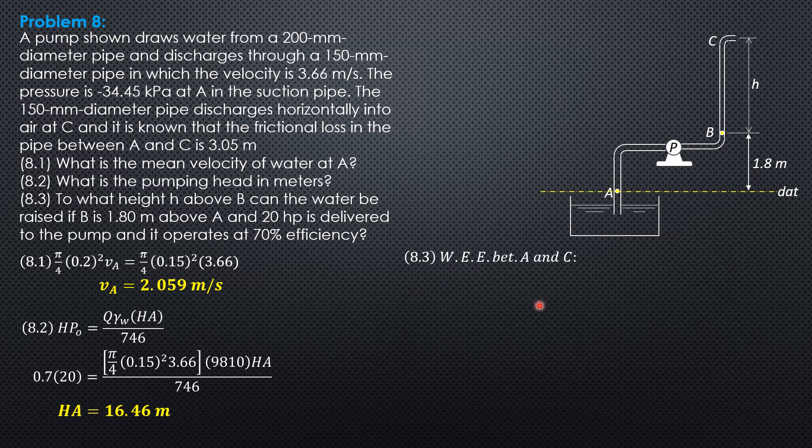Write energy equation between A and C considering head loss from A to C which is 3.05. We have velocity head at A plus elevation head at A plus pumping head equals velocity head at C, pressure head at C plus elevation head at C plus head loss from A to C.